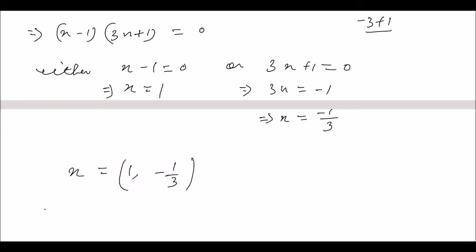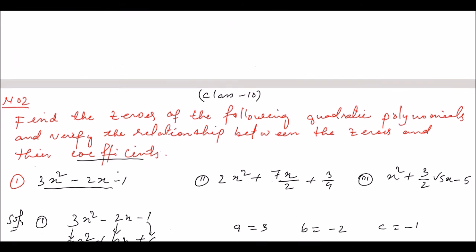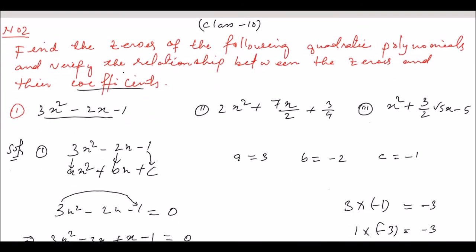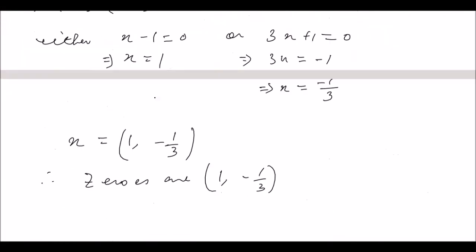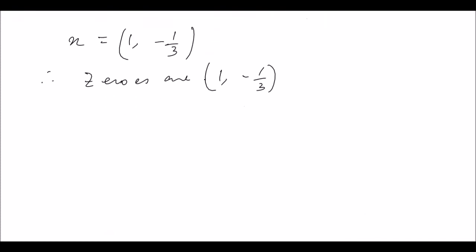Therefore the zeros of the polynomial are 1 and minus 1 by 3. Now the second part is to verify the relationship between the zeros and their coefficients.